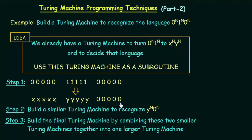The first Turing machine — used for recognizing 0^n 1^n — takes care of parts one and two, converting them into x's and y's. Now we will design a similar Turing machine; the only difference is that instead of recognizing zeros and ones, it will recognize y's and zeros. The first Turing machine handles parts one and two, and the second Turing machine handles parts two and three, and together they allow us to recognize that particular language.